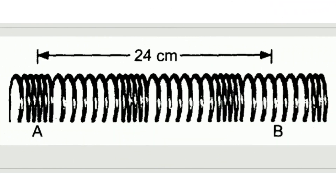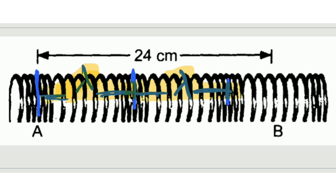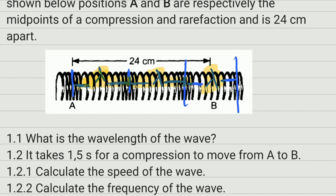The first thing we're going to check is how many waves are represented here, because the wavelength is for one wave. From the center of the first compression to the center of the second compression is one wavelength. From that center to the next compression is another wavelength. So we have two wavelengths so far, and then from there to the end is another partial wavelength.